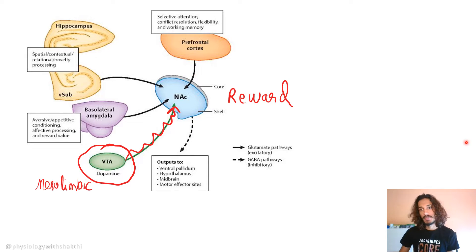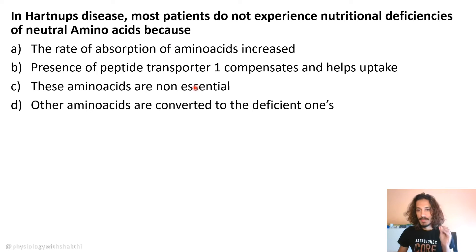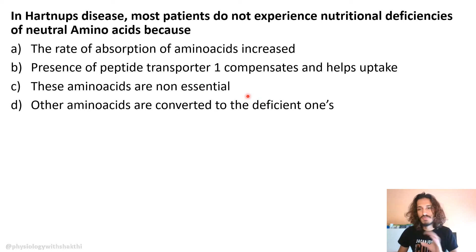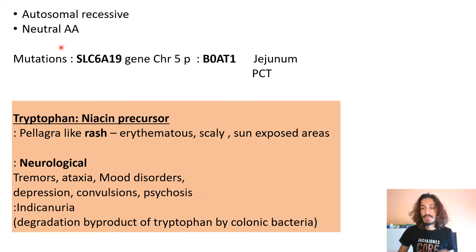In Hartnup's disease, most patients do not experience nutritional deficiency of neutral amino acids. To understand this, you need to know the concept behind Hartnup's disease. First, it is autosomal recessive and there is a problem in absorption of neutral amino acids — specifically neutral amino acids are affected.